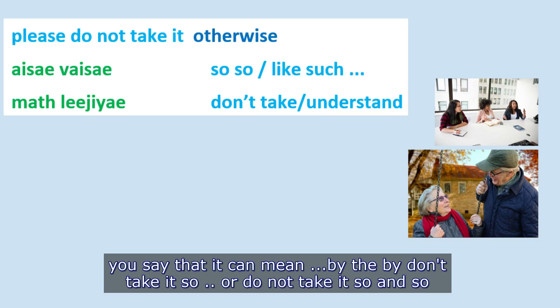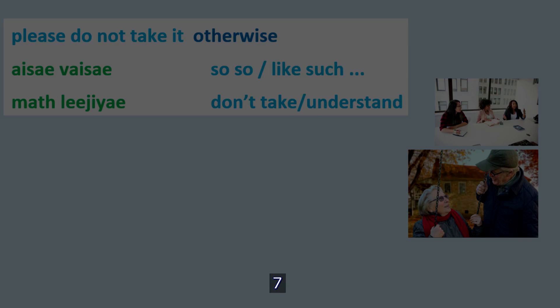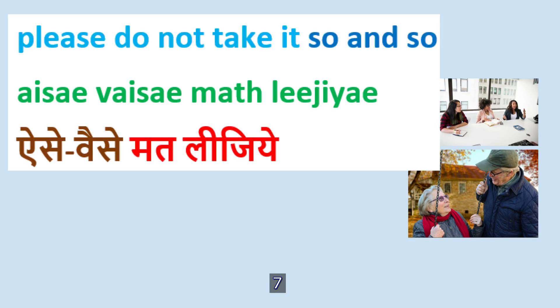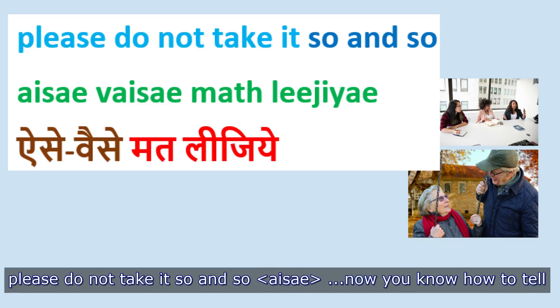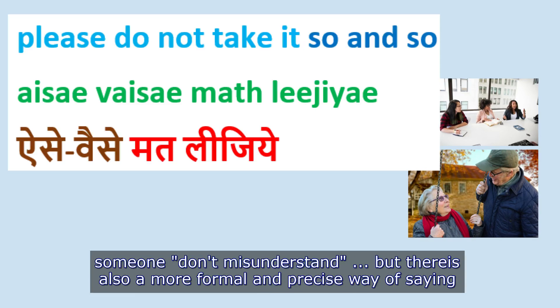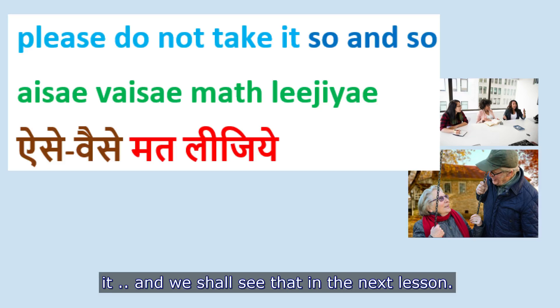When you say it, it can mean: by the way, don't take it so, or do not take it so and so. Please do not take it so and so — 'Eise veise mathliji.' Now you know how to tell someone don't misunderstand. But there is also a more formal and precise way of saying it, and we shall see that in the next lesson.